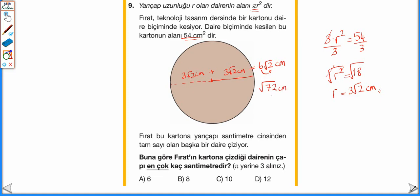Bu dairenin içinde çizilebilecek en büyük çaplı dairenin çapı √72 cm'dir. √72, 64 ile 81 arasındadır, yani 8 küsür bir değer alacak. Tam sayı çaplı dairenin alabileceği en büyük tam sayı değeri 8 olarak bulunur. Yani cevap B.